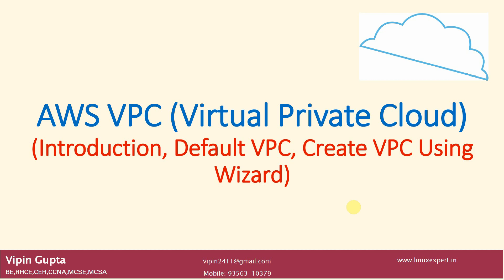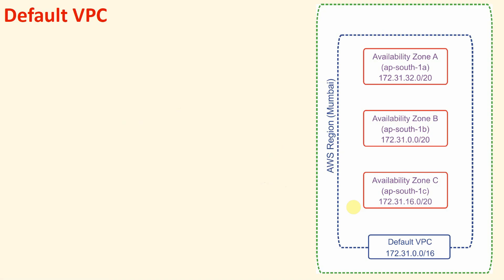Now when we talk about networking, whenever we are going to create any instance — whether it is a Windows instance or Linux instance — it will be given one default private address. Which address will be given is decided by the IP address range that is in the default VPC.